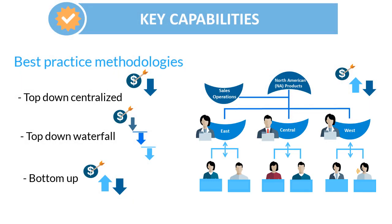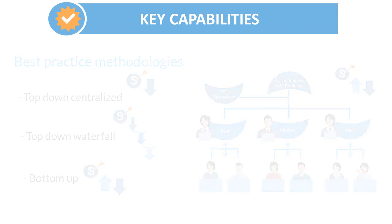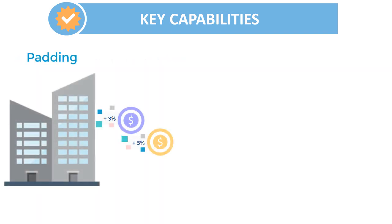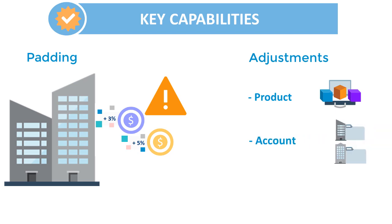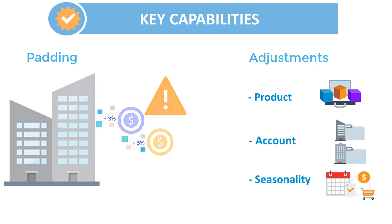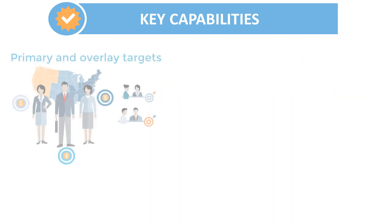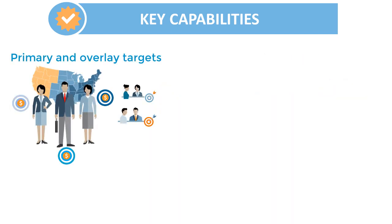You can perform bottom-up planning after top-down planning. Also provided are quota optimization tools, such as organization-wide padding so you can modify quotas in anticipation of known or possible risks. Three types of adjustments: product, to modify quotas to plan for portfolio changes; account, to modify quotas if historical data doesn't reflect customer potential; and seasonality and period, to reflect customer and sales trends.